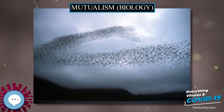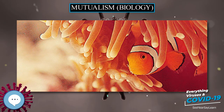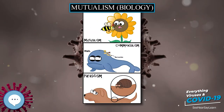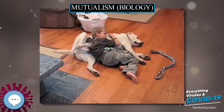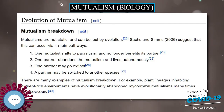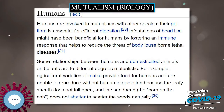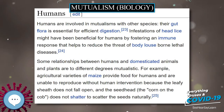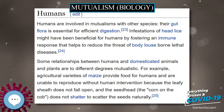However, mutualism has historically received less attention than other interactions such as predation and parasitism. The term mutualism was introduced by Pierre-Joseph van Beneden in his 1876 book Animal Parasites and Messmates.